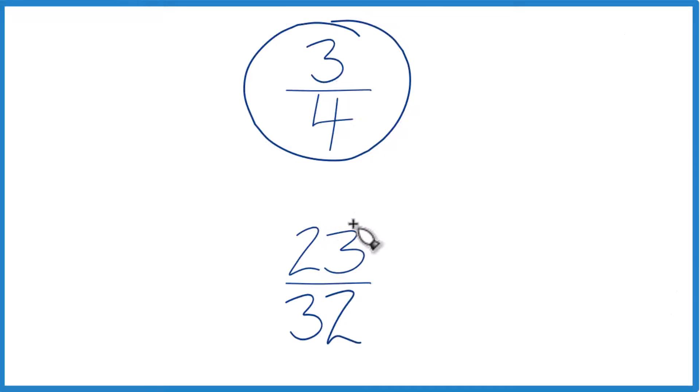So first off, you could divide 3 by 4 in a calculator, 23 by 32, and you get decimals and compare the decimals.